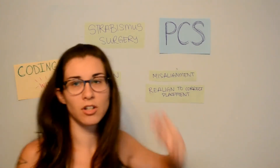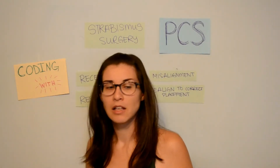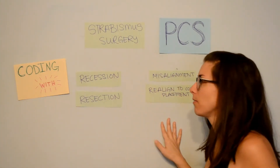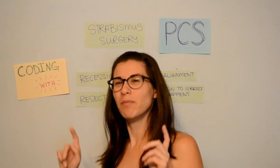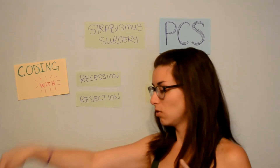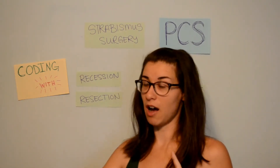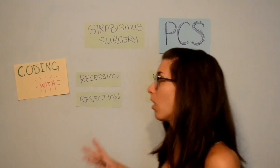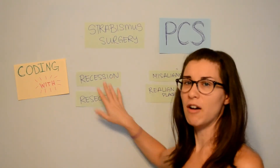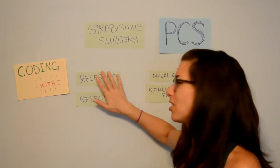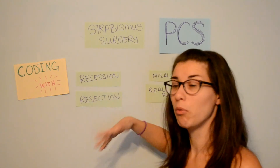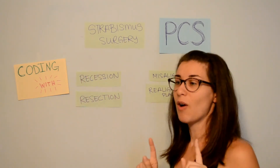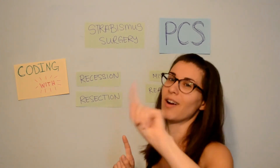So that is strabismus surgery — what it is, why it connects to me, and how you would find its root operation and define the objective. In another video coming up pretty soon, we will use the procedure steps from that article as a template for actually coding in the PCS code book for one or both of the strabismus surgeries. We might just stick with recession, but we might decide to do both, so we can actually see how we would find it in the code book — especially since I have never coded this type of procedure before.